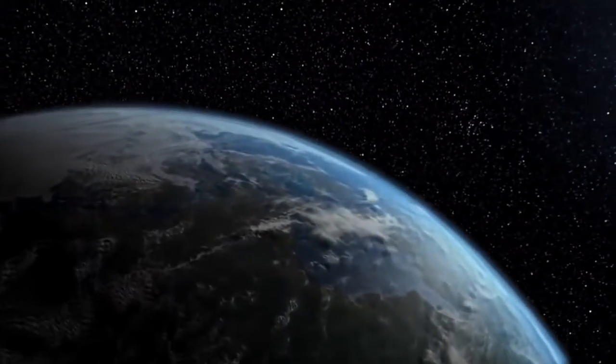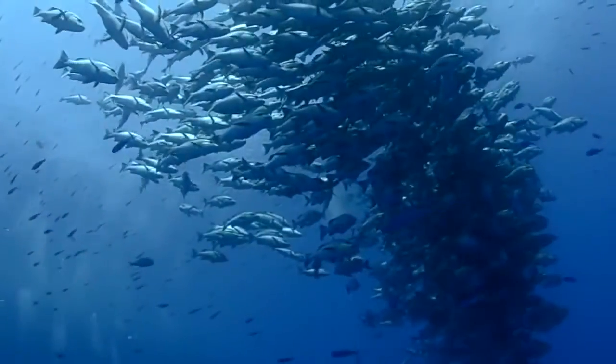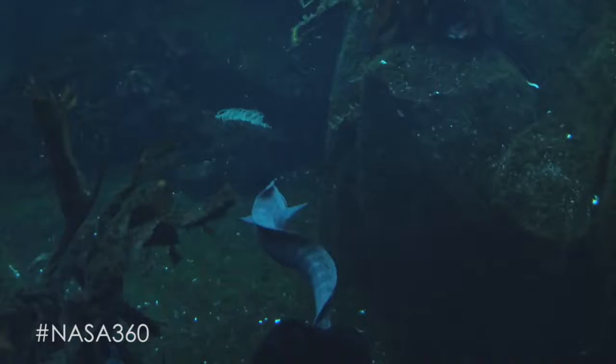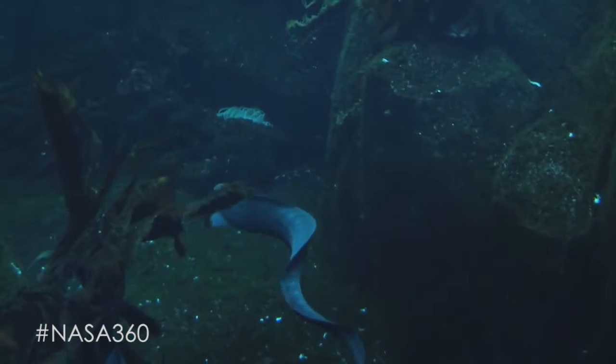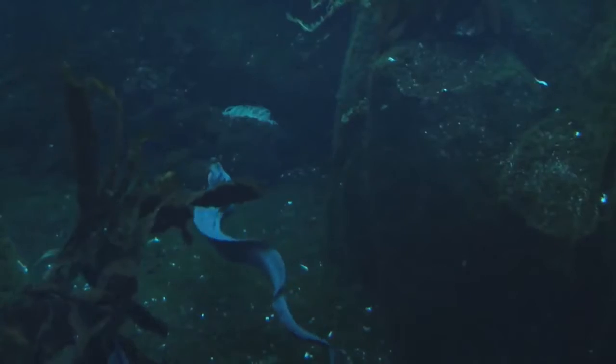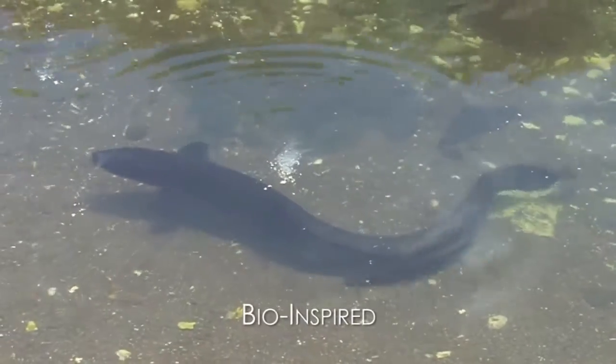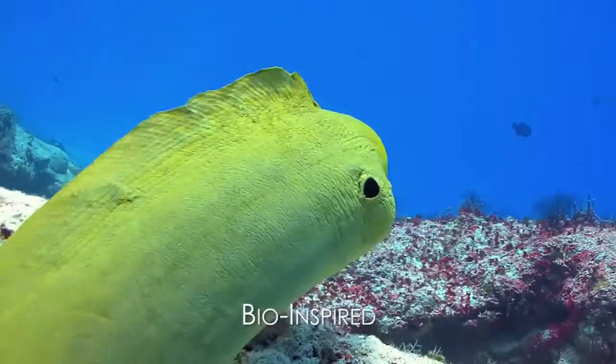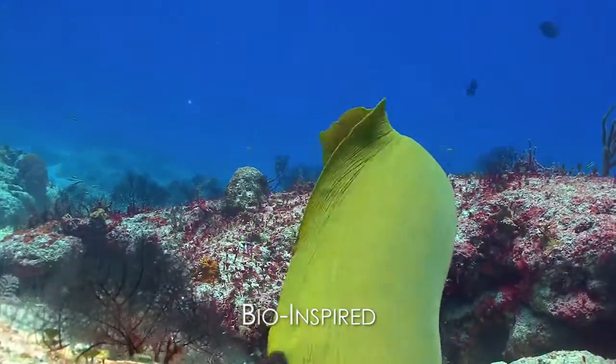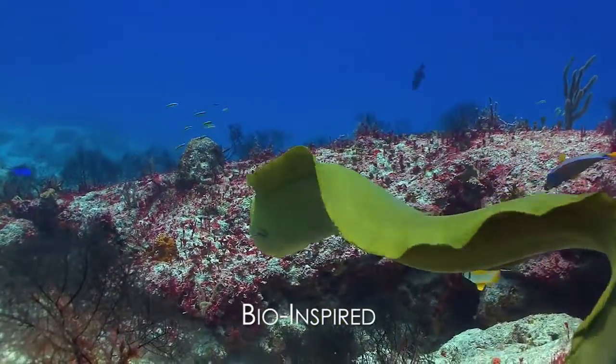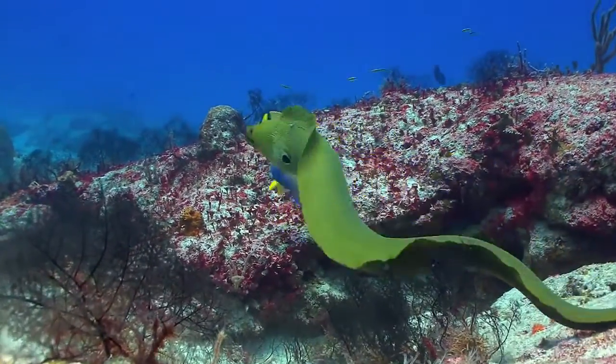It turns out that nature is very good at making efficient creatures that swim through the water. Can we learn from nature? Can we create a rover that swims not through high-speed screws or propellers but instead through very slow motions of its body, and thereby transfer as much as possible the energy that we do have available into locomotion? So that's the name of the game here.